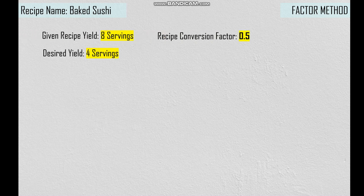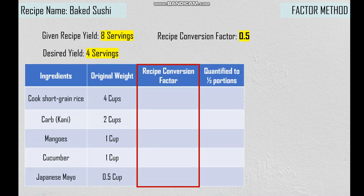Another given is a recipe conversion factor which is 0.5, and if you are wondering how we get that, later on we will find out. So first, we have here a table consisting of 4 columns. The first column consists of all the ingredients: cooked short grain rice, the crab or kani, mangoes, cucumber, and Japanese mayo. The second column is the original weight of the ingredients.